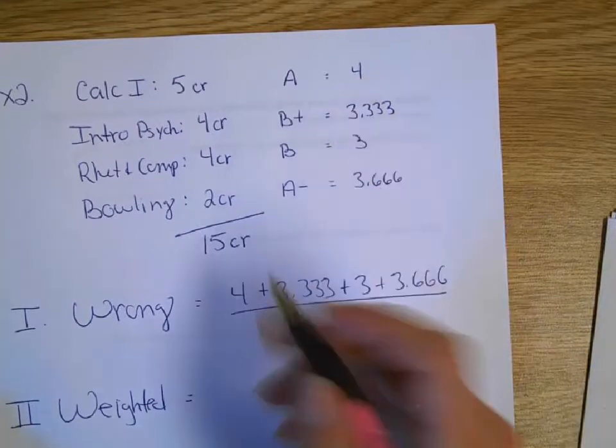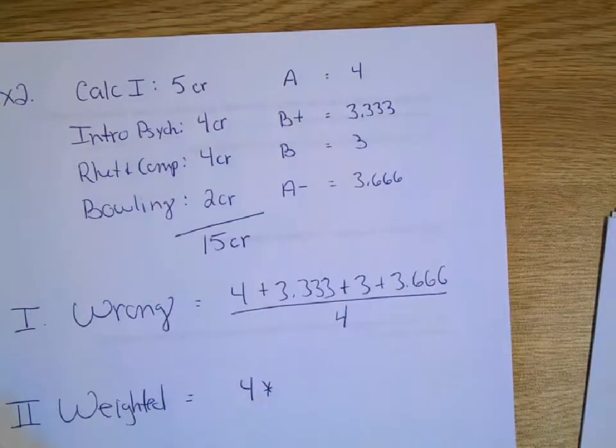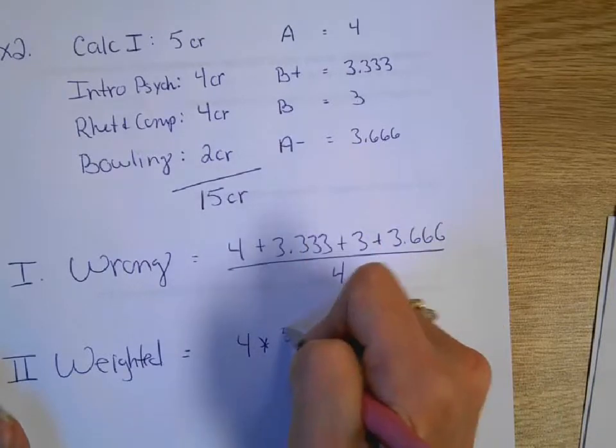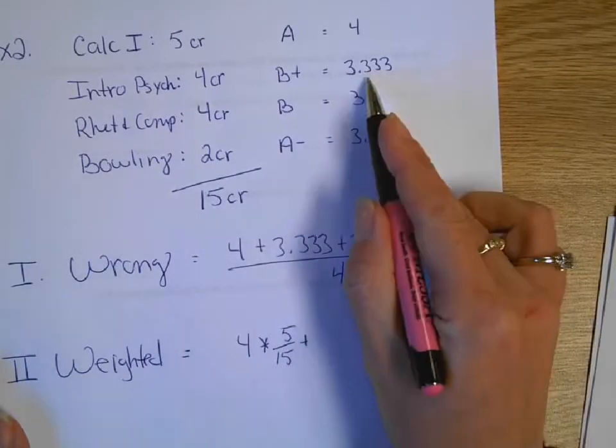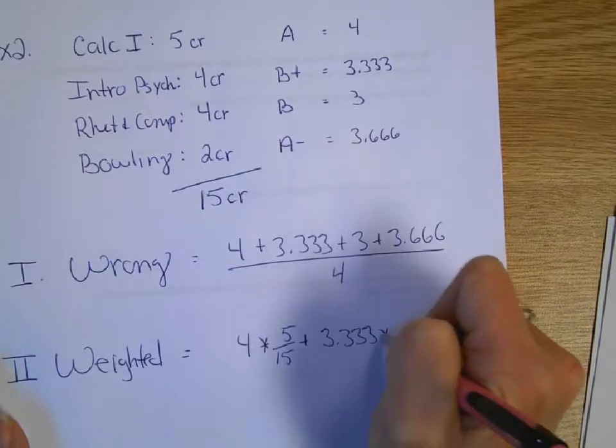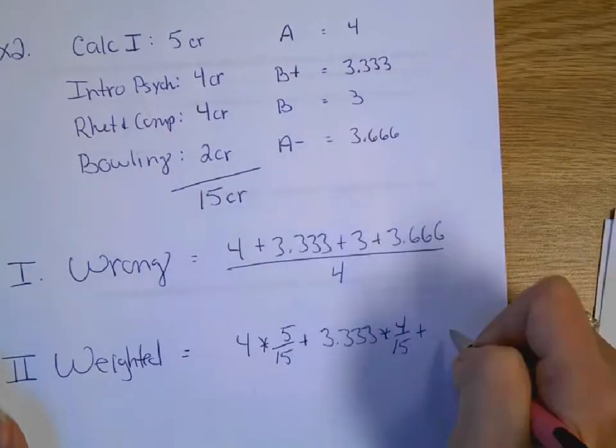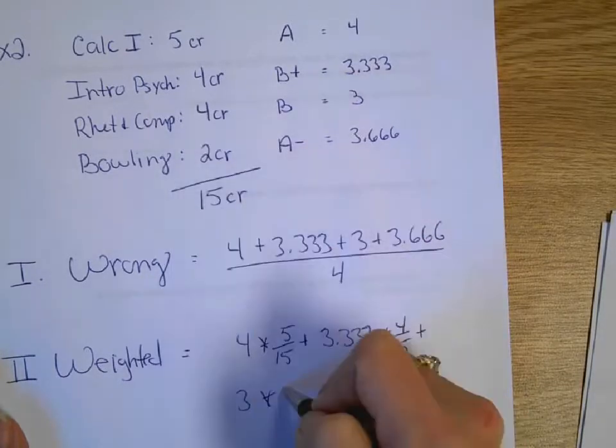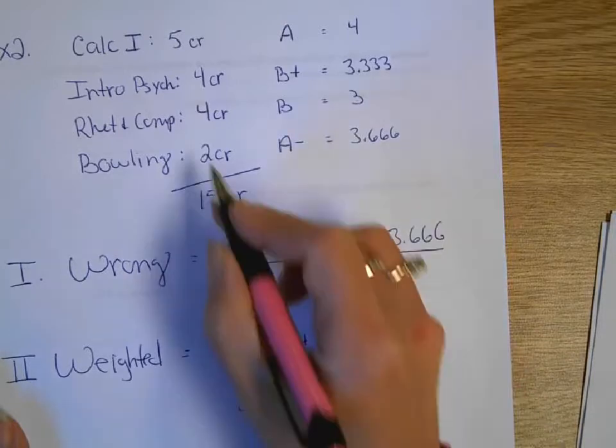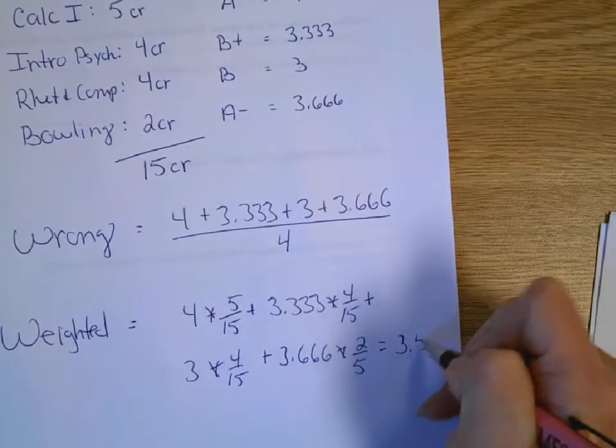So, the weighted way to do this. Our average for Calc was a 4, multiplied by its weight. Its weight is 5 credits. Remember, weight is a fraction or a percent. So, what fraction of your semester was Calculus? Well, it was 5 out of 15, or 1 third of my total credit. Then the average for the Intro to Psych was 3.33, and its weight was 4 out of 15. And you keep going. The 3.0 B was 4 out of the 15 credits. And then the 3.66, 2 out of 15. And if you type that all in correctly, you come up with a 3.5 GPA for the semester.